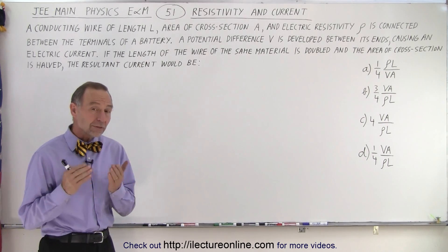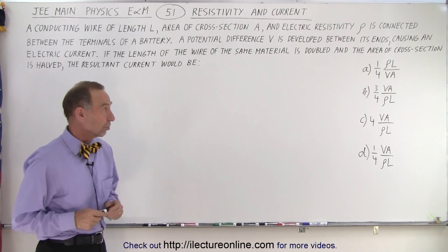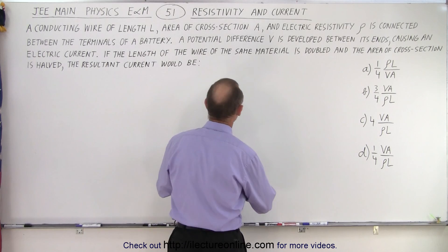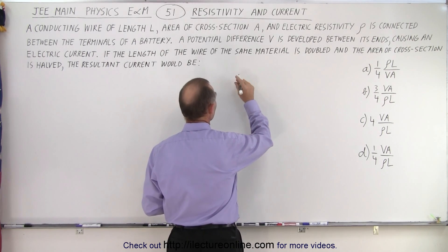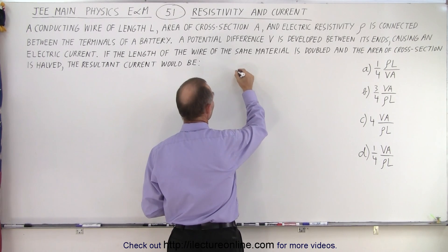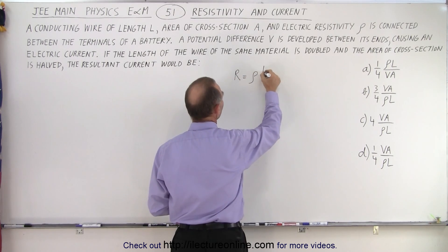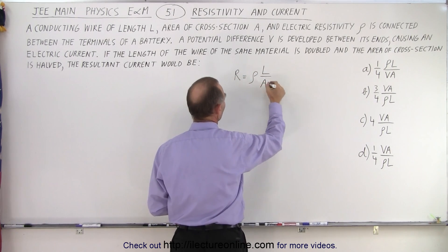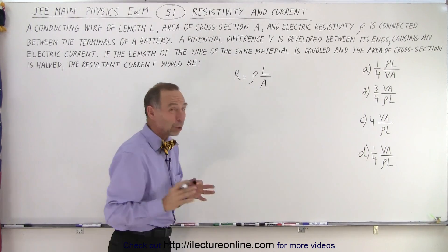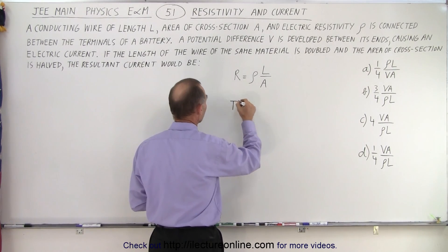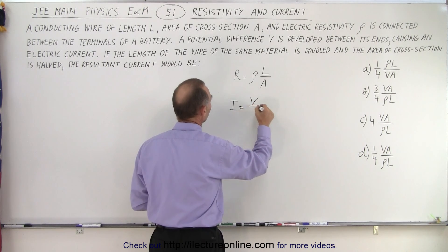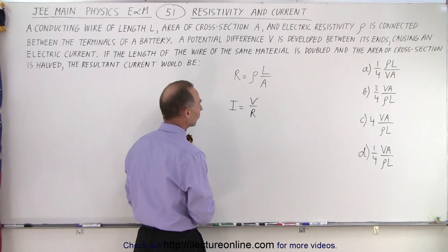In order to solve this question, we need to know two equations. First, the equation for resistivity versus resistance: the resistance is equal to the resistivity times the length of the wire divided by the cross-sectional area. The second equation is Ohm's law, which says that current is equal to V over R, the voltage over the resistance.